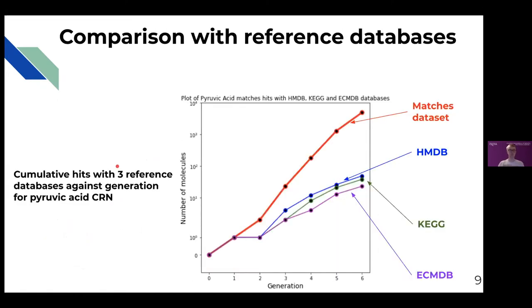Moreover, we discovered that some of the identified match nucleoside analogues are present in existing reference databases. Hits were found between the match dataset yielded by a particular CRN with three reference databases: the Human Metabolome Database, the Kyoto Encyclopedia of Genes and Genomes, and the E. coli Metabolome Database. This figure specifically plots the cumulative number of hits between the matches dataset yielded from the pyruvic acid CRN specifically with those three databases, but it exemplifies what's true for all five networks: that the number of hits between the matches dataset for a CRN increases with all three reference databases with generation number, while still representing a small proportion of the total matches dataset, as you can see, bearing in mind that this is a graph with a logarithmic scale.